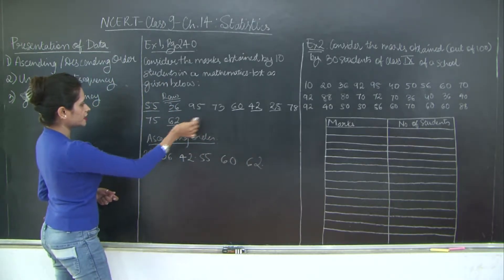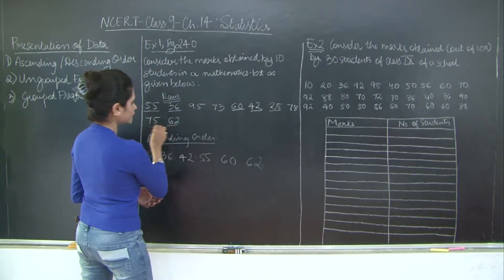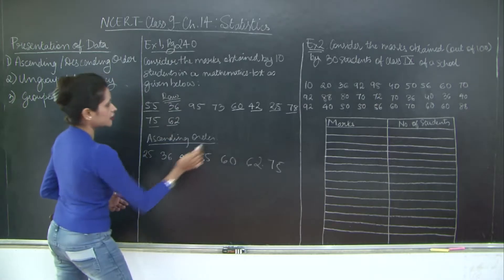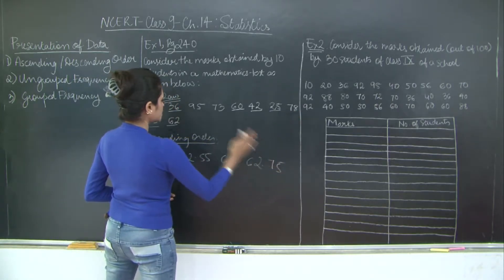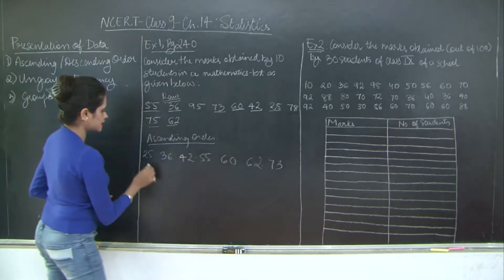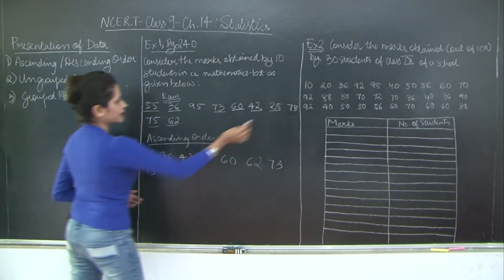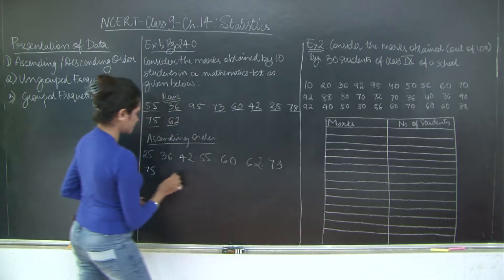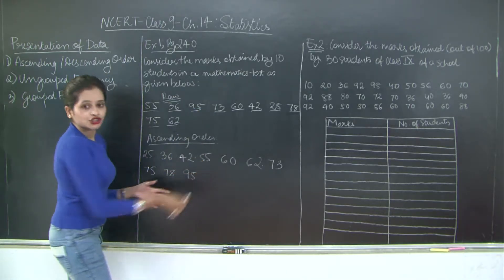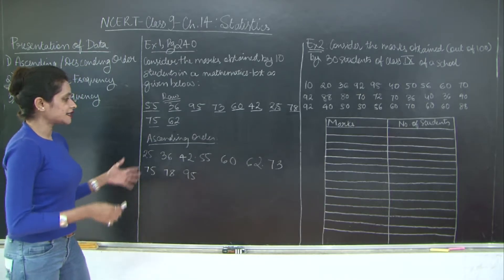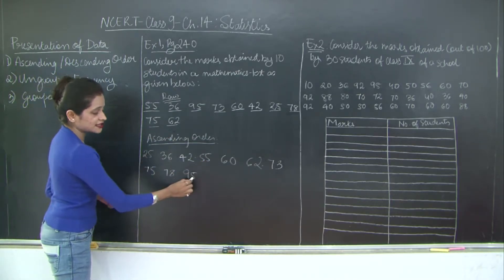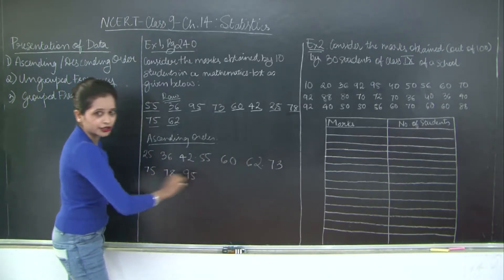Then after 42, I have 55. After 55, there is 60. Then there is 62. Then there is 73 first, so I am going to underline this. Then there is 75. And then there is 78. And finally there is 95. So now the data has been organized in ascending order. See this is the lowest mark and this is the highest mark, so I have gone in increasing order.